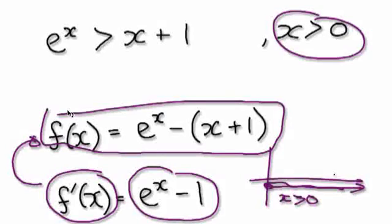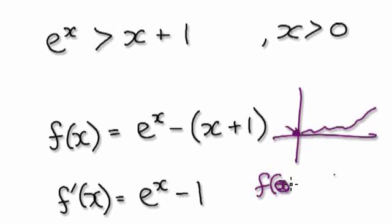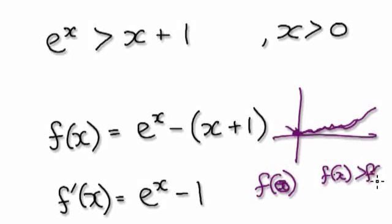Now, if the original function is always climbing, we would select a point that's really low down — that should be f of zero. If our function is always climbing, then we can say that f of x will always be greater than f of this really low point here.